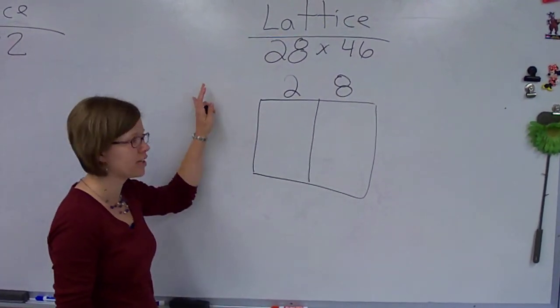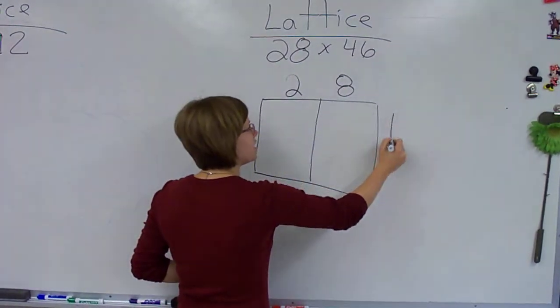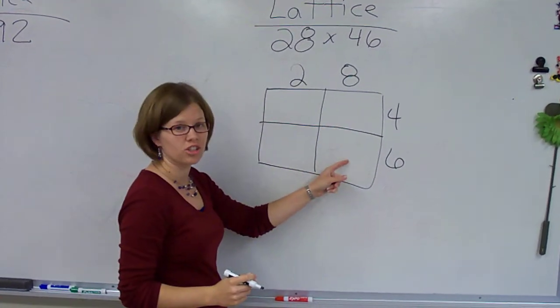So, for example, if I was doing a three-digit, I would need a third box, but I just have two, so I just need two here. Then down the side, I'm going to write my 46, which requires me to have two rows, one row for each digit there.